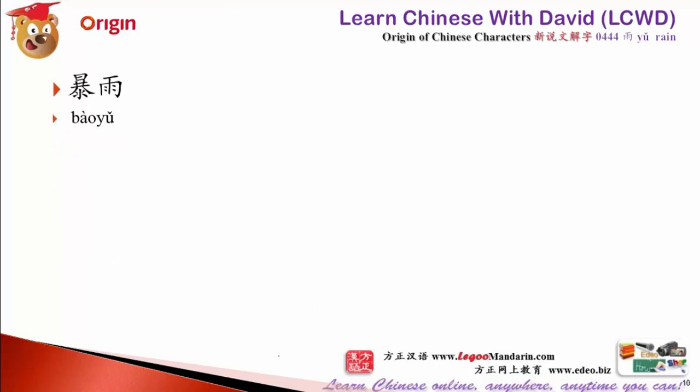暴雨 — 暴 means violent. 暴雨 means storm. 暴风 also means storm. So 暴雨 and 暴风 both describe stormy conditions.